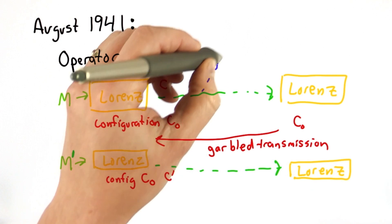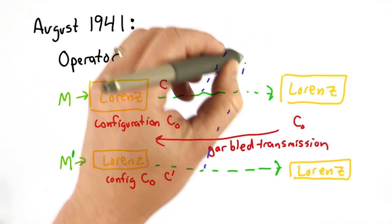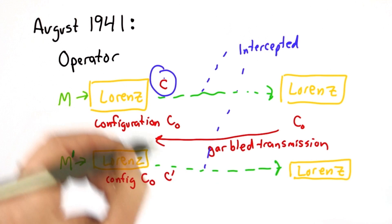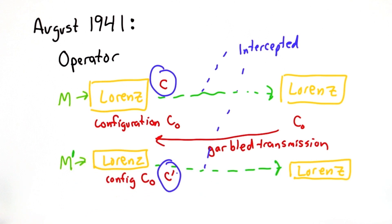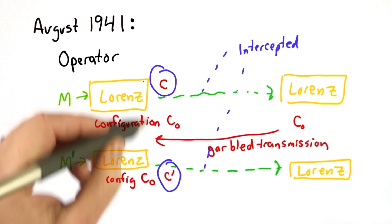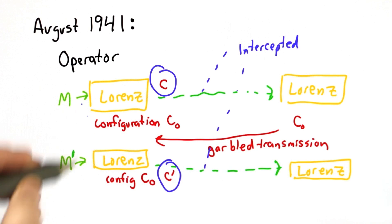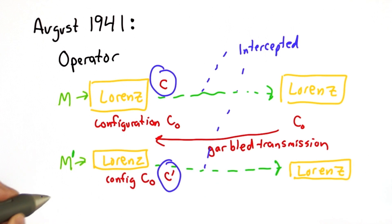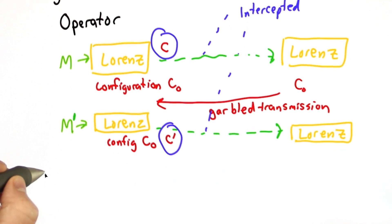Both of these messages were intercepted. The Allies now had access to both c and c prime. They didn't know anything about the key or the original messages. Well, maybe they knew a little bit about the original messages, and that's what would help them. Given these two ciphertexts, they could figure out both the key and, once they had the key, the structure of the Lorenz.